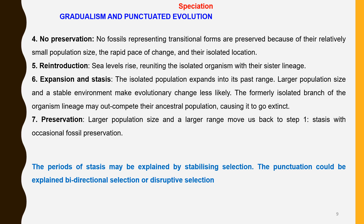Next, when the sea level rises, the isolated population reunites with the ancestral or sister lineage. In this combined population, expansion occurs. The larger population size and a stable environment makes evolutionary changes less likely. The formerly isolated population lineage may sometimes outcompete the ancestral population, causing it to go extinct.